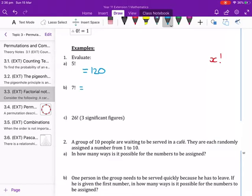For 7 factorial, this would be the same as 7 times 6 times 5 times 4 times 3 times 2 times 1. And when we put that into our calculator, we get 5,040. So it's much quicker just to go 7 factorial into our calculator.